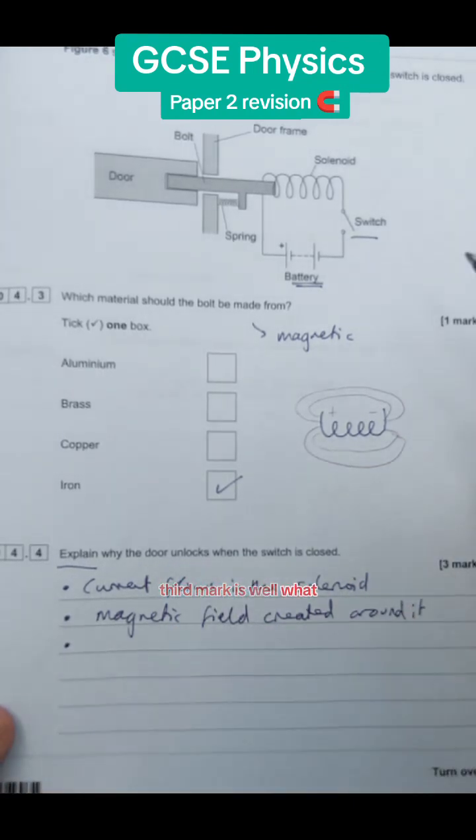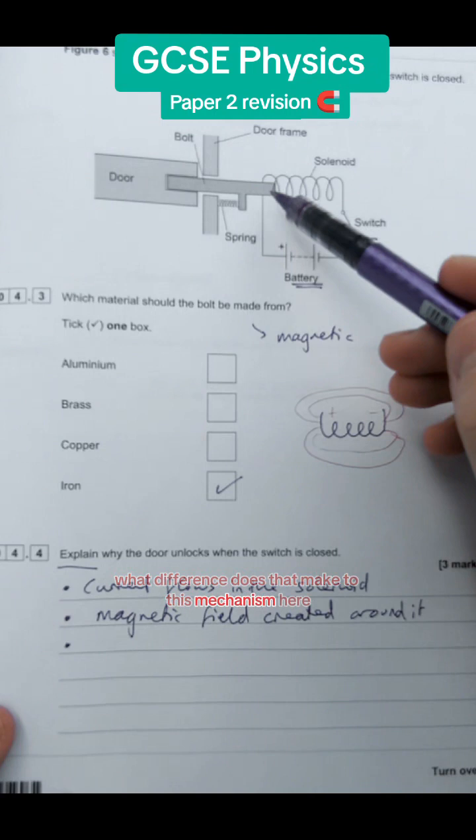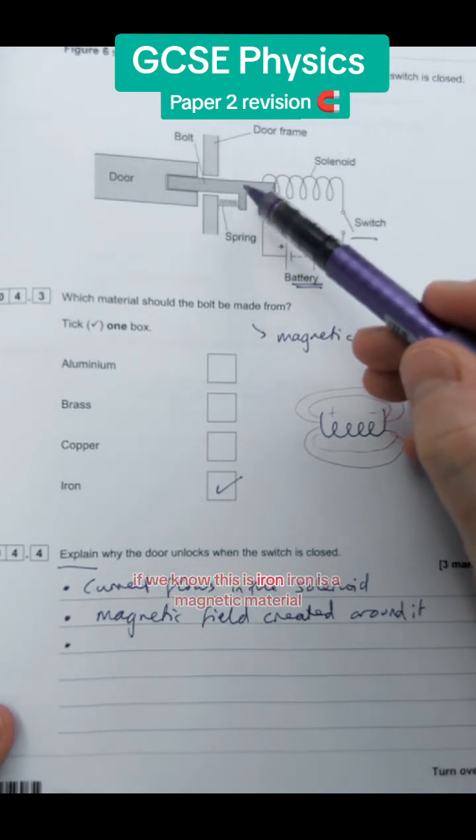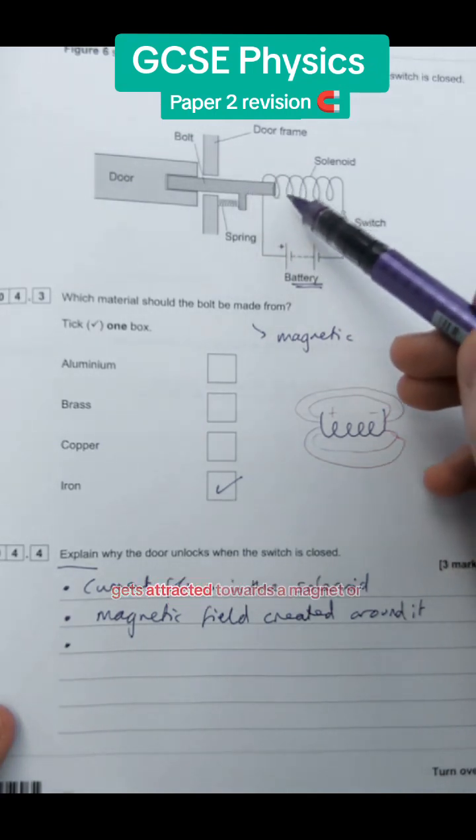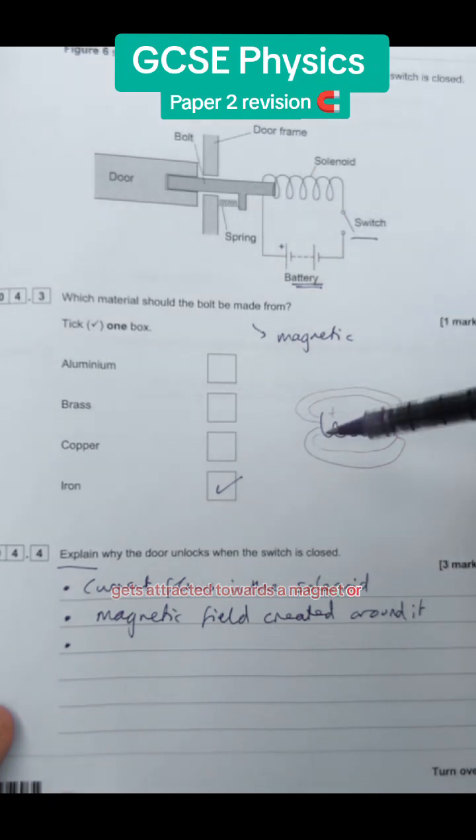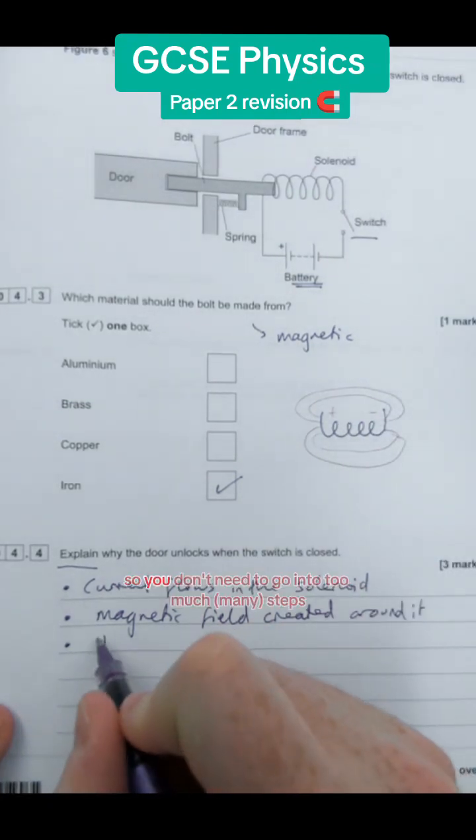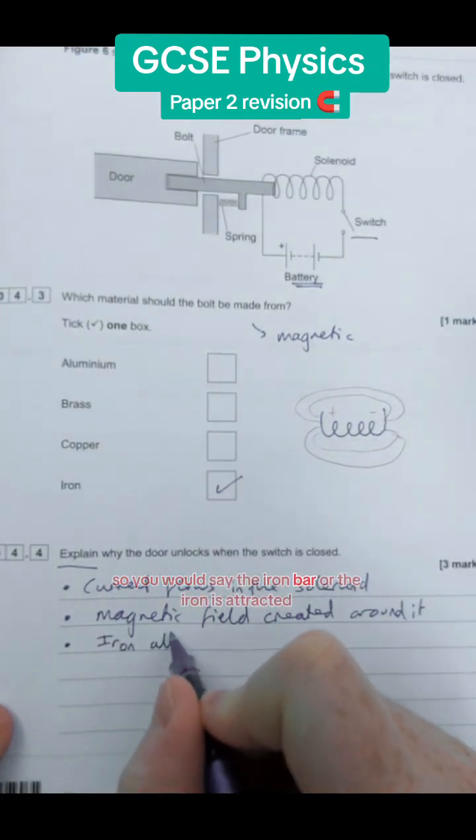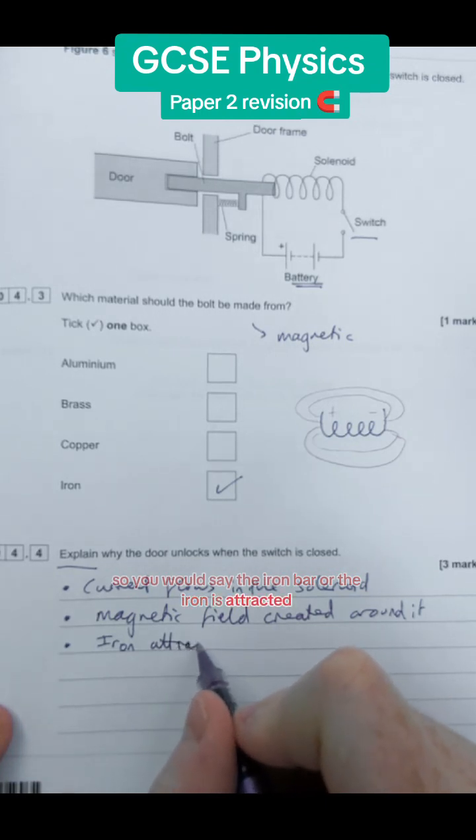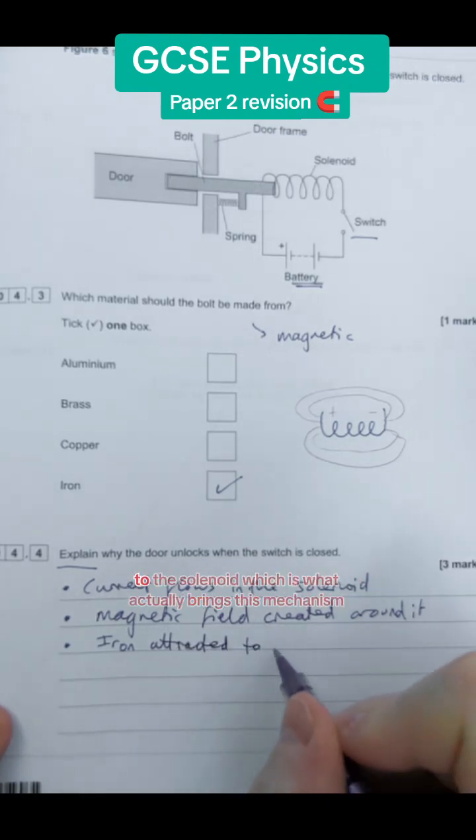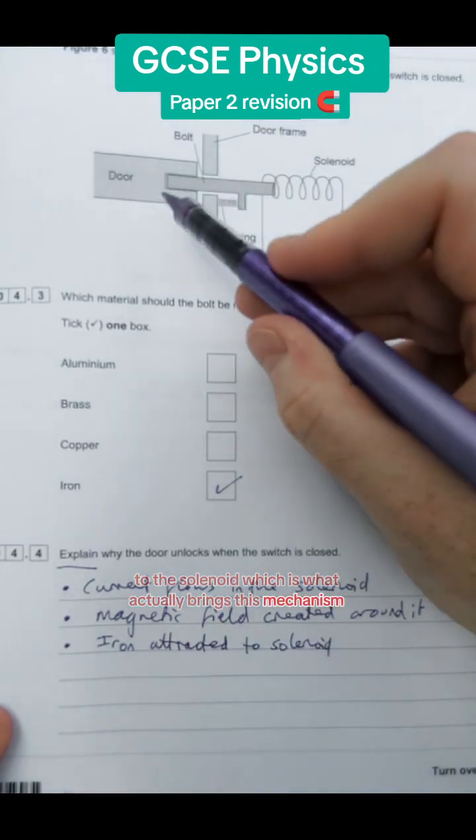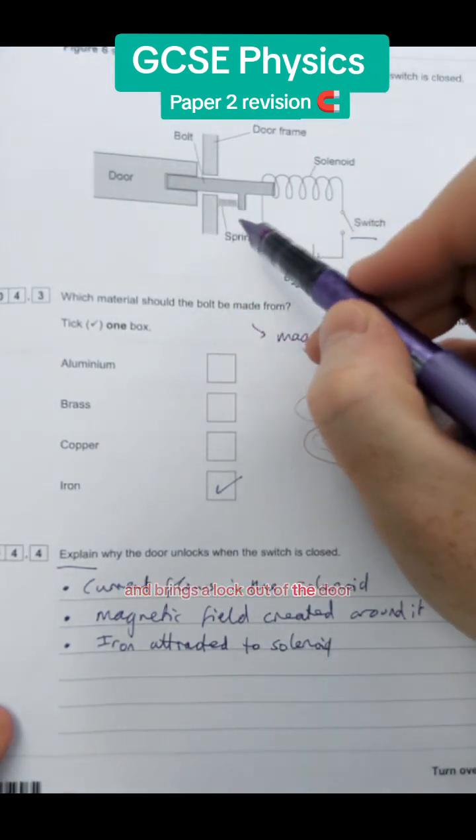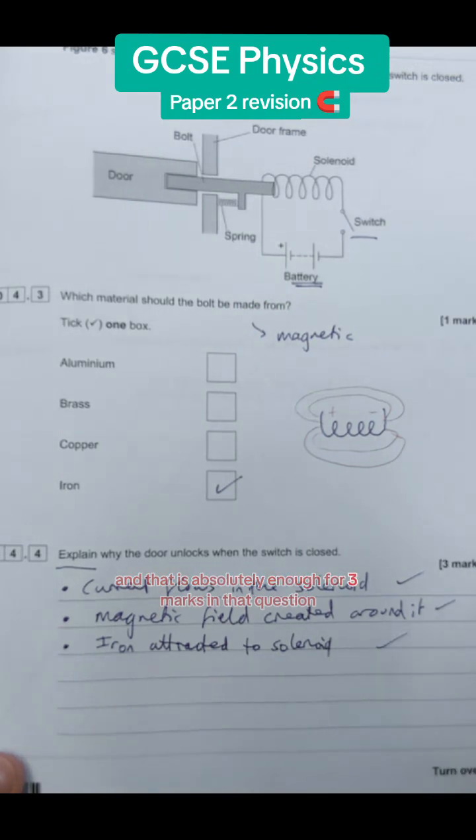Third mark here is what difference does that make to this mechanism here. If we know this is iron, iron is a magnetic material that gets attracted towards a magnet or something with a magnetic field. So you don't need to go into too much depth here, we just say the iron bar or the iron is attracted to the solenoid, which is what actually brings this mechanism and brings the lock out of the door. And that is absolutely enough for three marks in that question.